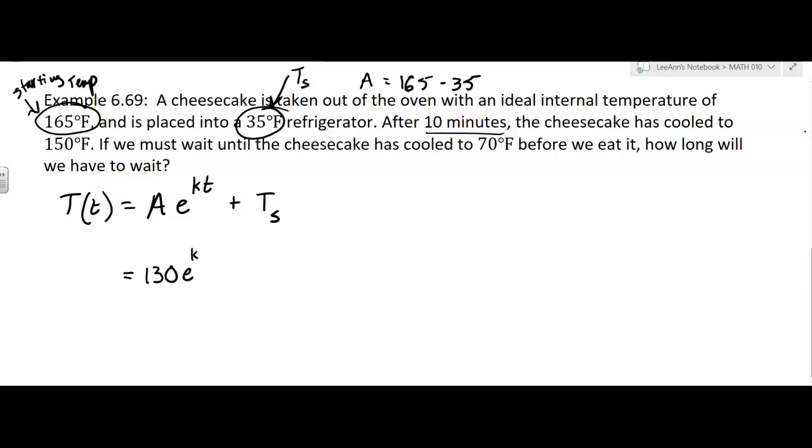After 10 minutes, so time is in minutes, we'll put in 10. We know the surrounding temperature was 35. After 10 minutes, the cheesecake is cooled to 150 degrees. So that's how the formula gets figured out. The temperature is now 150, the difference between the starting temp and the surrounding temp is 130, it was 10 minutes, and the surrounding temperature is 35.